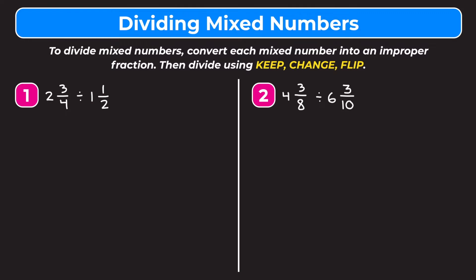To change two and three-fourths into an improper fraction, we multiply the denominator by the whole number: four times two is eight, then add that to the numerator — eight plus three is eleven. So eleven is our new numerator and we keep the denominator as four, giving us eleven-fourths.